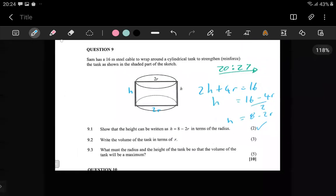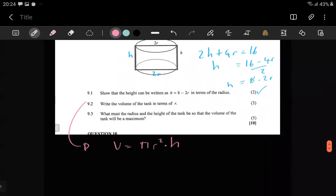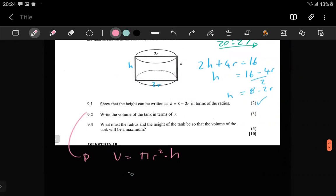The second one, write the volume of the tank in terms of r. We need the volume of the cylinder which is just π r² times the height, because it's the area of the circle multiplied by the height being upwards.